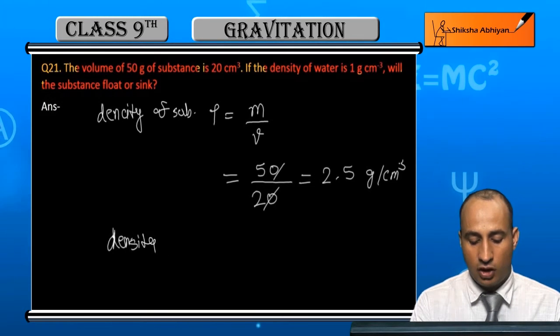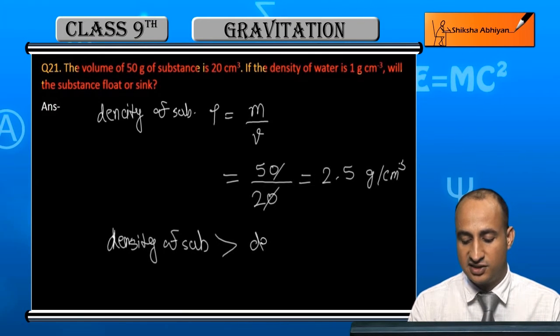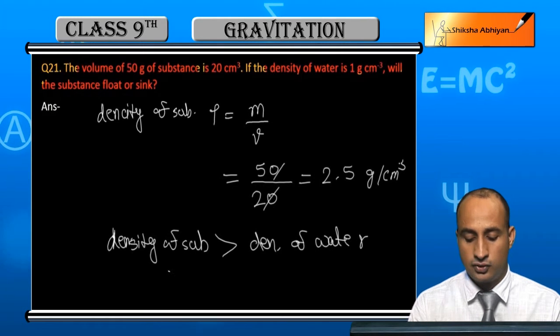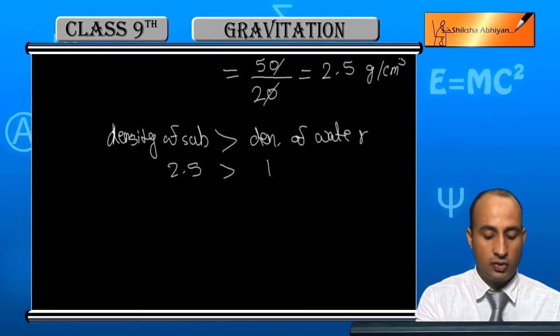Students, if you see here, this is density of substance. The density of substance is greater than density of water. This is 2.5 and this is 1, so if density is more than water...